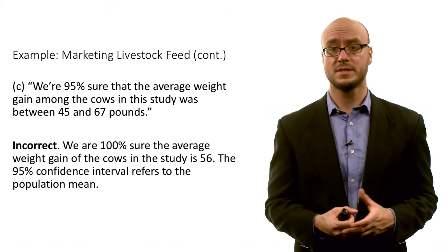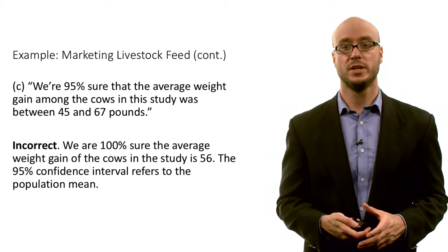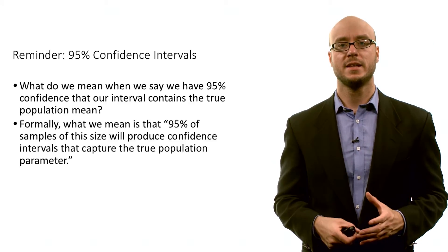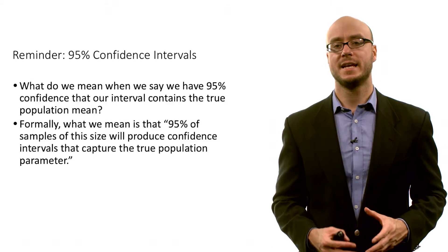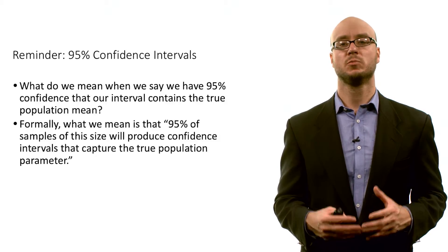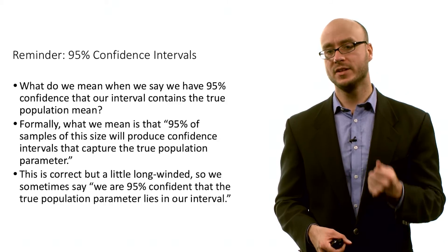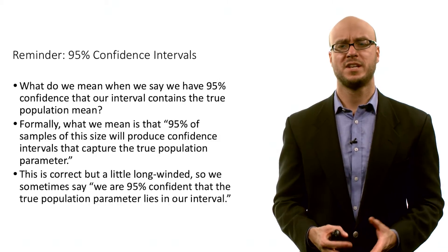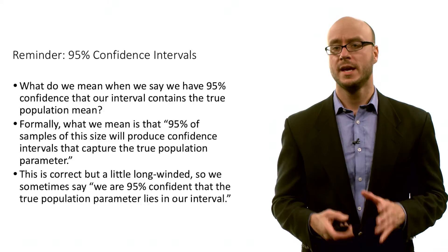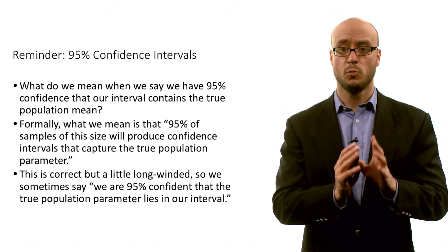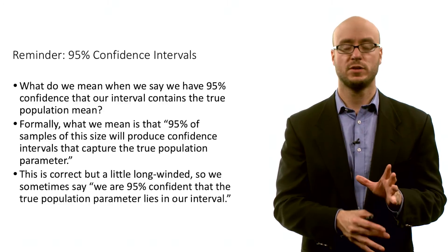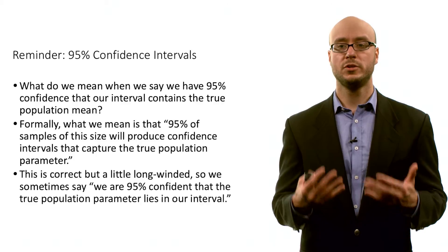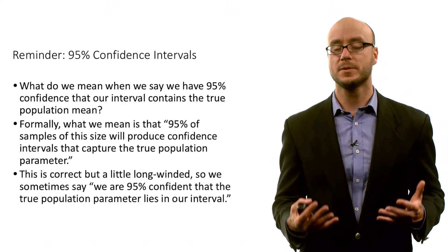To the extent that we're 95 percent confident that the true population mean parameter lies within a particular interval — I want to emphasize this: formally, what we mean when we say we have a 95 percent confidence interval is that 95 percent of samples of that size will produce confidence intervals that capture the true population parameter. Often people will say we are 95 percent confident that the true population parameter lies in our interval. We know the properties of a particular sample, but using what we know about the sampling distribution, we can say we're 95 percent confident that the true population parameter lies within our calculated interval.